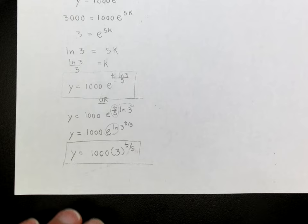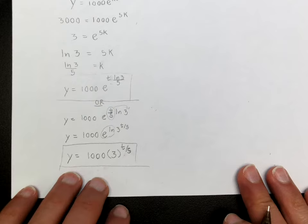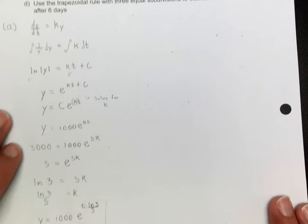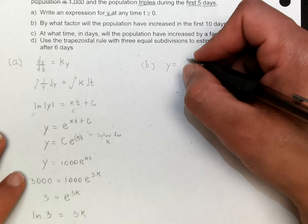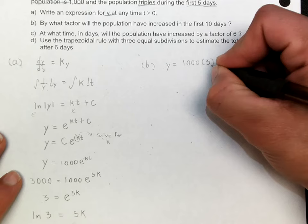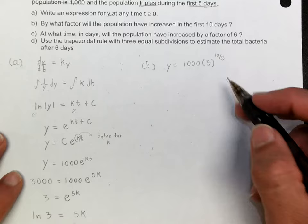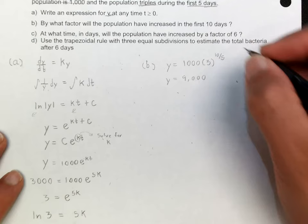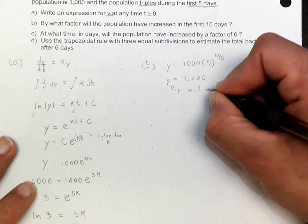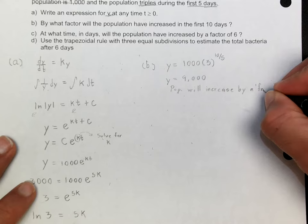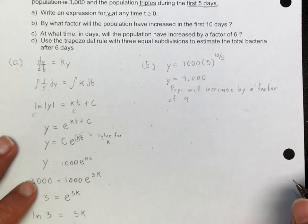For part B, we want to know by what factor the population increases in the first 10 days. Plug t = 10 into Y = 1,000 · 3^(T/5): that gives 1,000 · 3^2 = 1,000 · 9 = 9,000. Since we started at 1,000 and ended at 9,000, the population increased by a factor of 9.